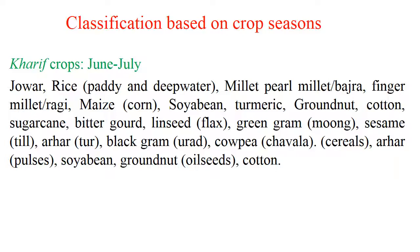Kharif crops include Jowar, Rice (either upland or lowland), Millet, Pearl Millet, Bajra, Finger Millet or Ragi, Maize, Soya Bean, Turmeric, Groundnut, Cotton, Sugarcane, Bittergourd, Linseed or Flax, Greengram or Moong, Sesame, Arhar, Blackgram, Cowpea, etc.